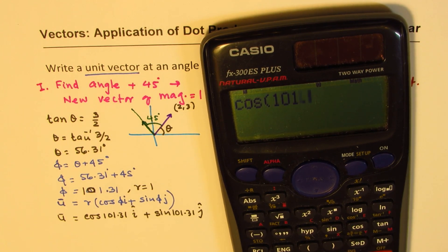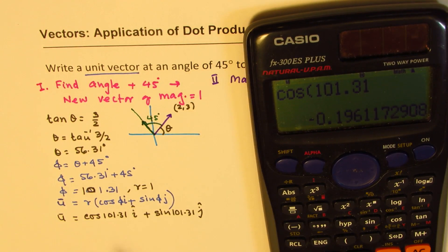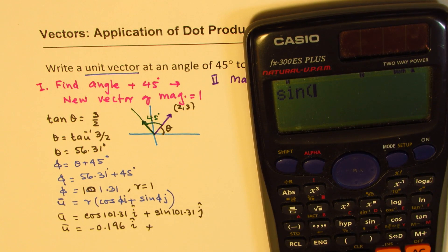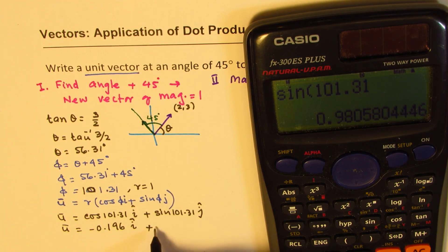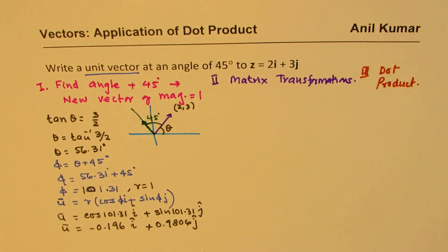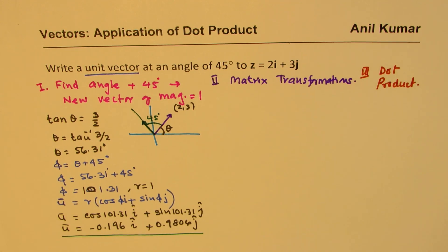We get cos(101.31°) = −0.196 î, which is a negative value as expected, plus sin(101.31°) = 0.981 ĵ. That becomes your unit vector. The magnitude will be 1, since we took r = 1 and cos²(theta) + sin²(theta) = 1 always. So that ensures it is indeed a unit vector.